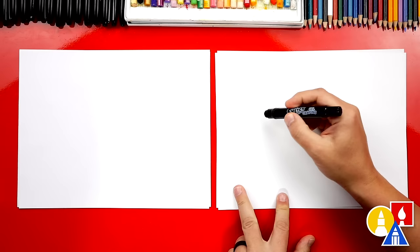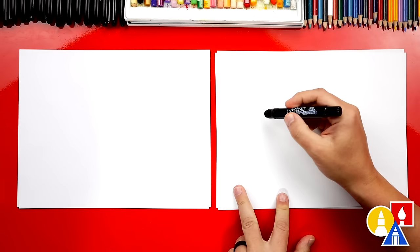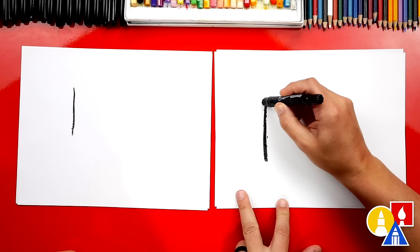We're going to turn our paper this way so that we have more room for our drawing. We're going to start with our black crayon and draw a line down, straight down on our paper. You draw right about here.